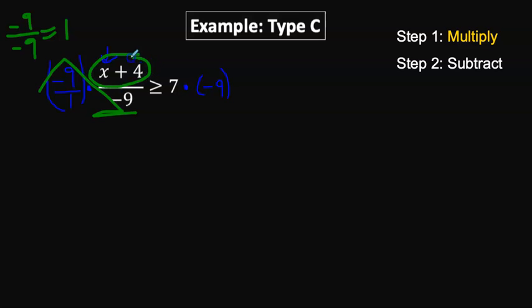We're only going to have this x plus 4 left over. When you do a problem like this, a type C, think about the fact that you're just going to have the numerator left over.